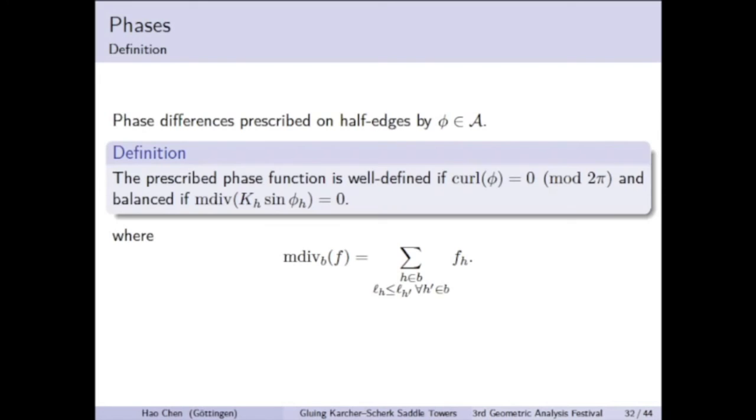Now we use a function to prescribe the phase differences. So for a half h that corresponds to a wing, the value of the function φ_h is the phase difference of the saddle tower glued to the wing over the saddle tower that the wing belongs. For the phase difference function to be well-defined, we need that the curl vanishes mod 2π. That means if we travel along a cycle, the change of height should be a multiple of the vertical period.